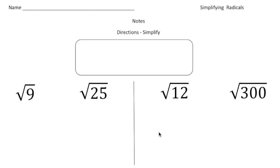Let's first take a look at this one here. We have the square root of 9. Hopefully by now you know the square root of 9 is 3, because if I factor this, 9 is really 3 times 3. So because it's 3 times 3, that's a perfect square. So the square root of 9 equals 3.